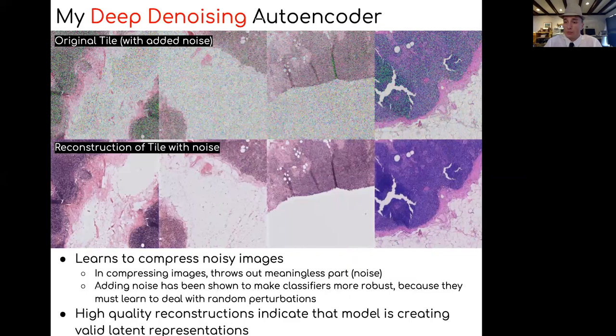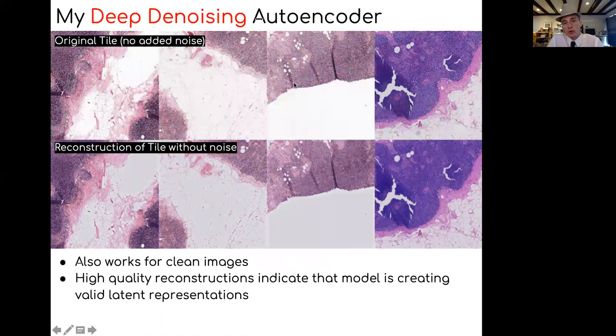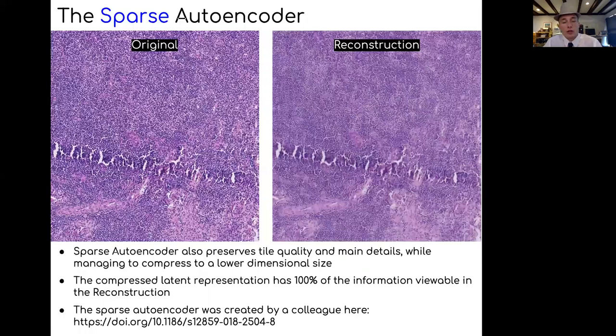I built two autoencoders for both my models. This is a deep denoising autoencoder - it takes in noisy images of pathology slide tiles and then denoises them to look less noisy. You can tell here it's doing a really good job, it's actually preserving details really well. Here's the same image without noise on it. The information is actually very well preserved across the compression, across the bottleneck of the autoencoder.